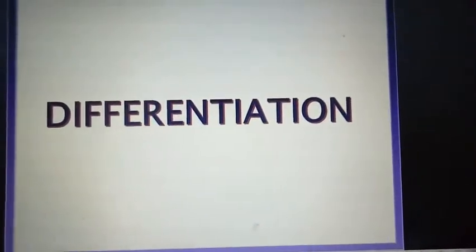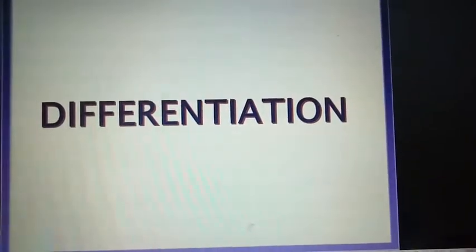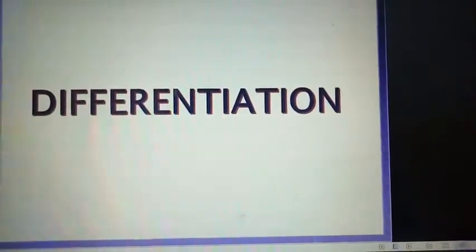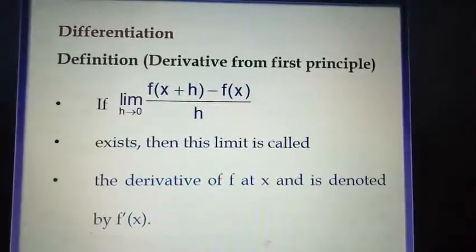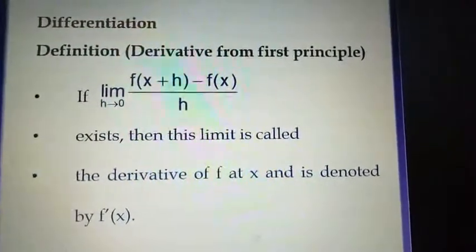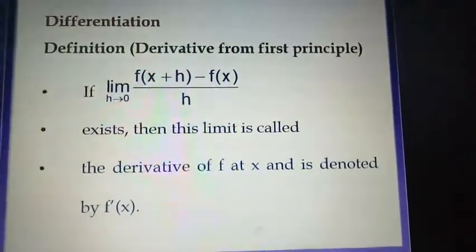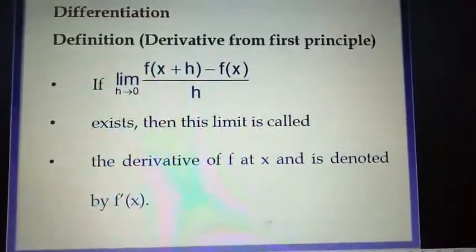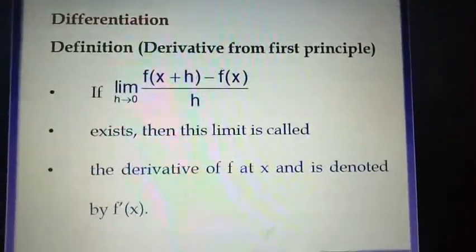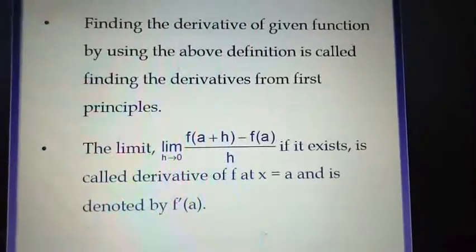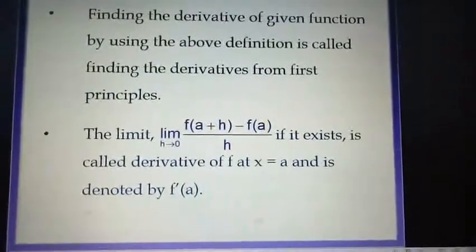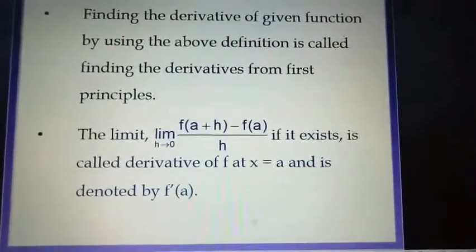The geometrical interpretation of derivative is that it gives the slope of the tangent to the curve at a point on the curve. Now we will discuss the definition of derivative. If x and x plus h belong to the domain of the same function f, and if the limit of f(x+h) minus f(x) upon h as h tends to 0 exists, it is called the derivative of the function f at x and is denoted by f dash of x. Finding the derivative using this definition is called finding the derivative from the first principles.